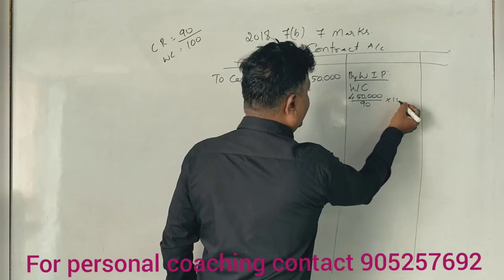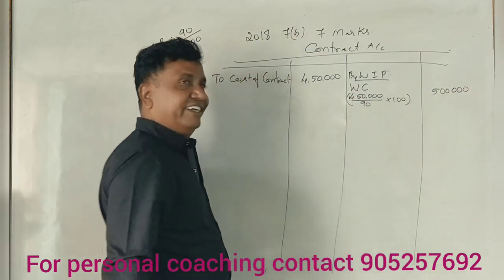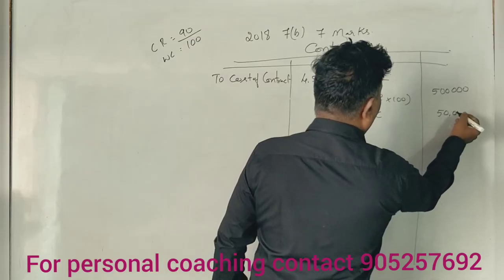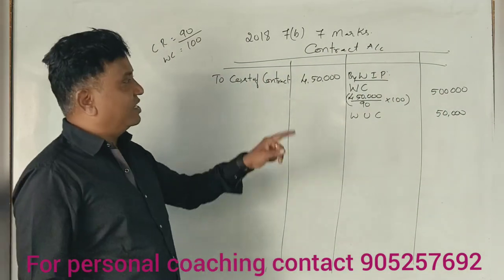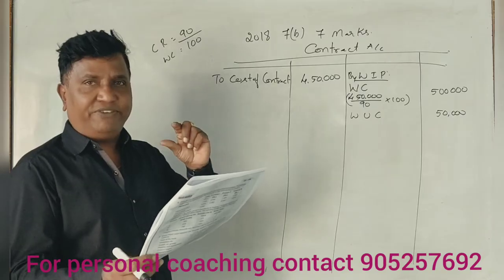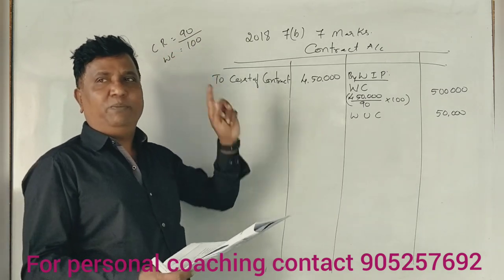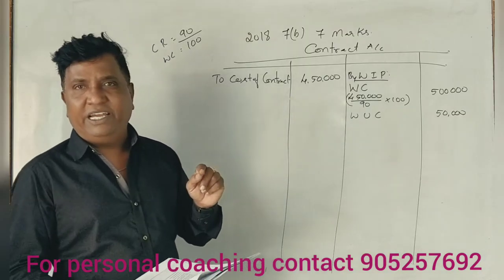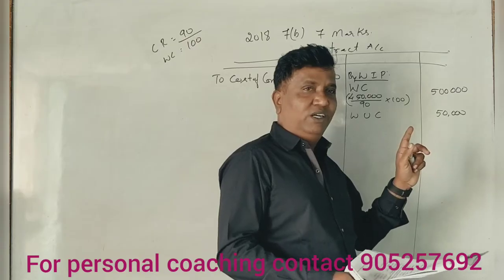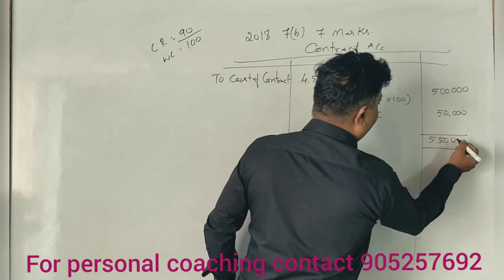Cash received is 90% of work certified. So if cash received is 4,50,000 rupees, that is 90% of work certified. Therefore, work certified equals 5 lakhs. Work in progress is also 5 lakhs — so work certified and work in progress is 5 lakhs. Correct.